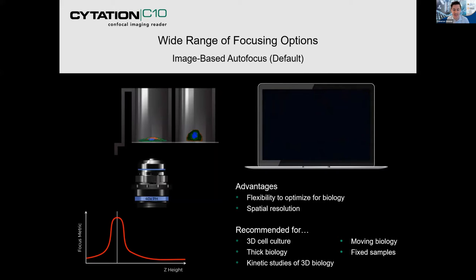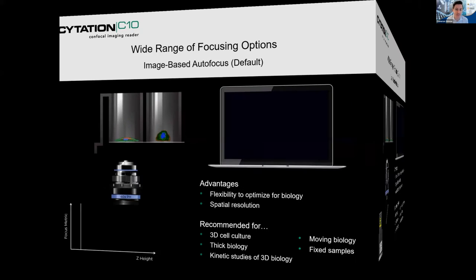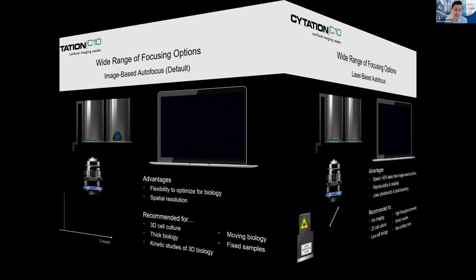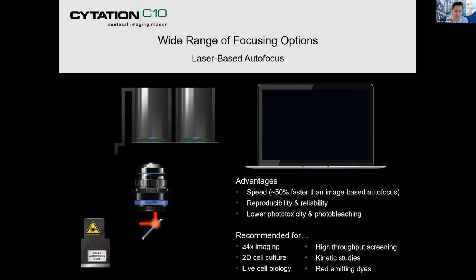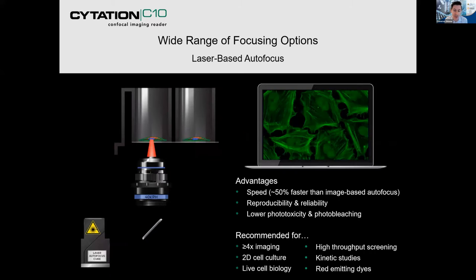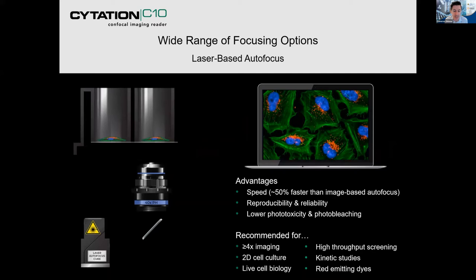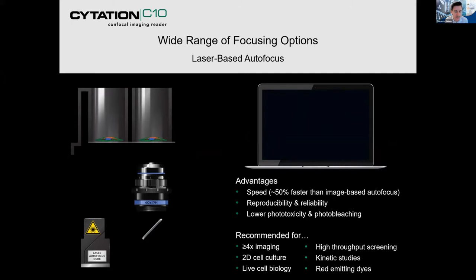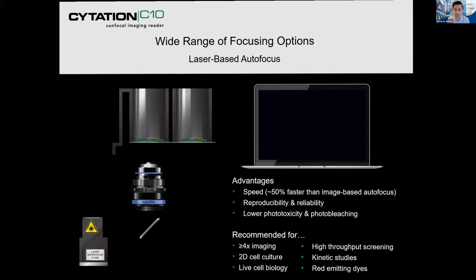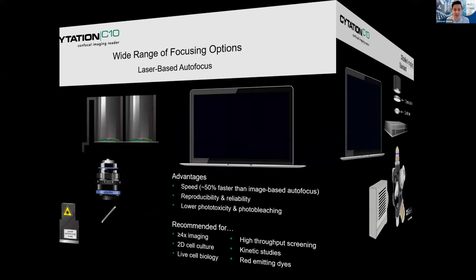Image-based autofocus is recommended for 3D cell cultures, thick biology, and kinetic studies of 3D biology. In contrast, we have a laser-based autofocus, where the speed is approximately 50% faster than image-based autofocus. It's highly reproducible and reliable, and it lowers phototoxicity and photobleaching.